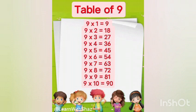9 ones are 9. 9 twos are 18. 9 threes are 27. 9 fours are 36. 9 fives are 45.